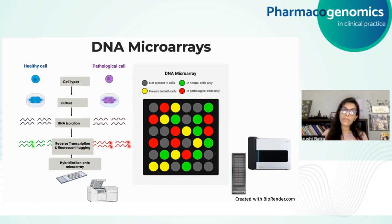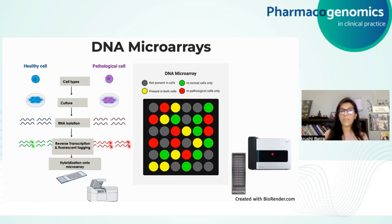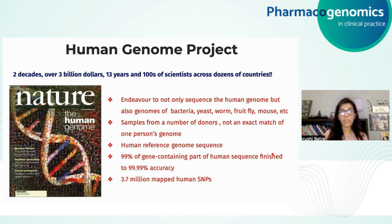Another area that came up after PCR was DNA microarrays. Traditionally microarrays compare a healthy cell versus pathological cells. Nowadays, genotyping-based microarrays have emerged where 600,000 to 700,000 SNPs are tagged onto chips, enabling genome-wide genotyping based on these variations using SNP genotyping arrays. These have been routinely used in many aspects of genomics.